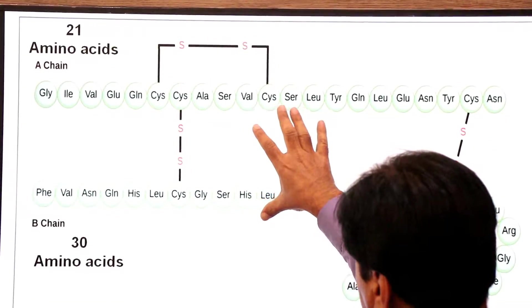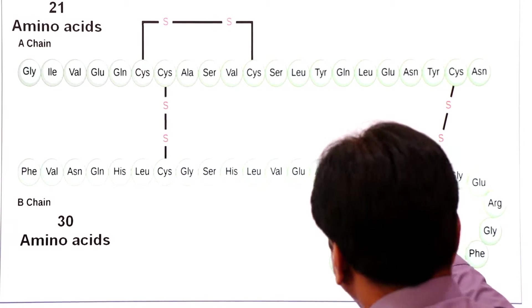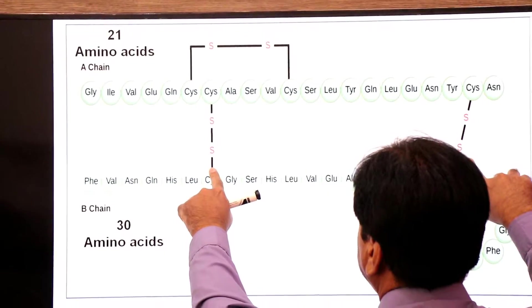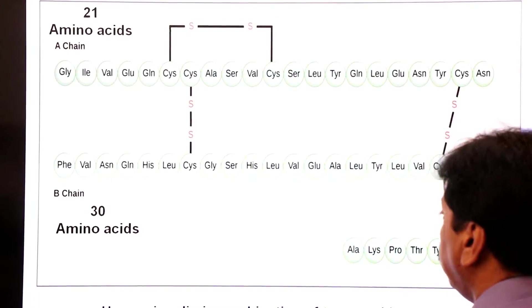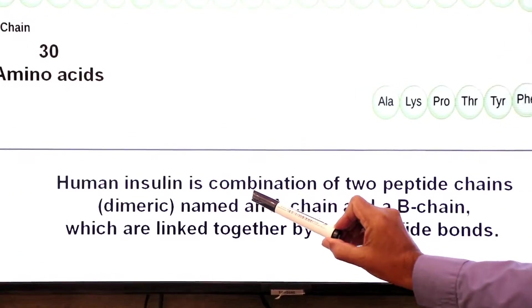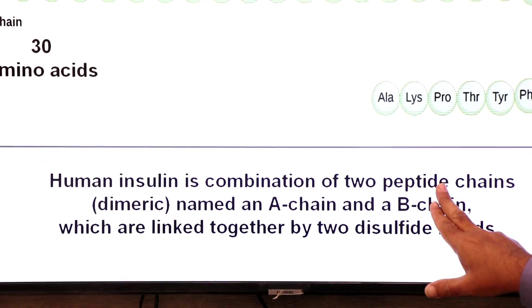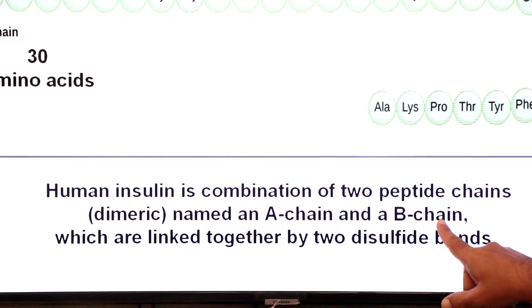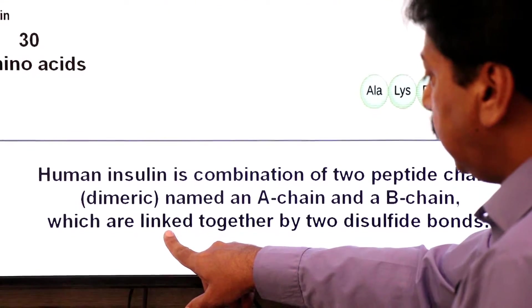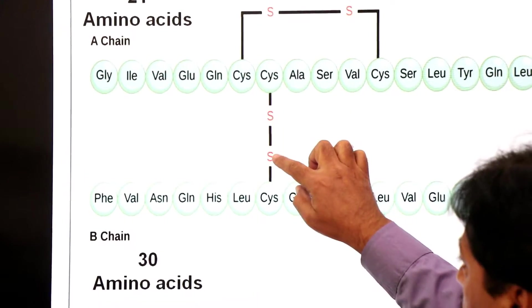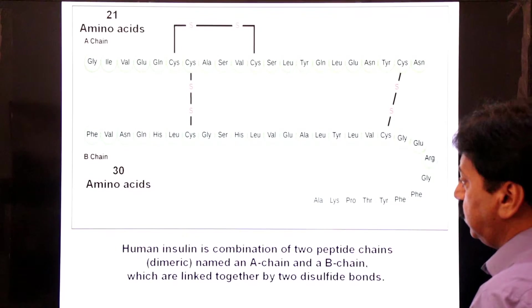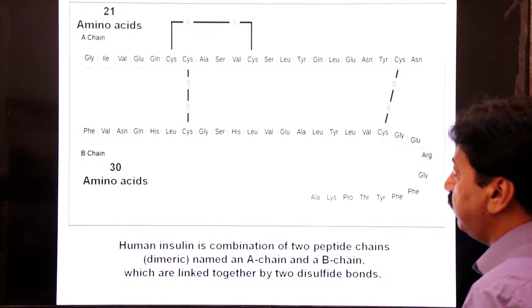This straight sequence visible here is the primary structure. However, at some places you will also see secondary structure coil structure. These two chains have two disulfide bonds — bonds formed between sulfur and sulfur atoms are called disulfide bonds. Human insulin is a combination of two peptide chains, chain A and chain B; that is why it is called a dimeric protein, made up of two subunits linked together by two disulfide bonds. This is the structure of human insulin, a protein made up of 51 amino acids.